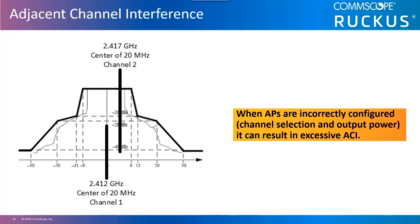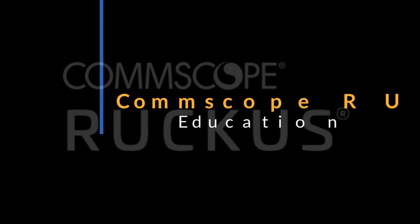However, in areas where neighbor wireless LANs can be seen, if they are using channels 2, 5, 7, 10, or 11 through 14, ACI may exist regardless of your network settings. This can be mitigated by carefully planning channel selections nearest these neighbor networks.